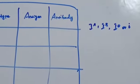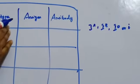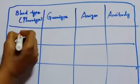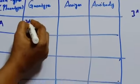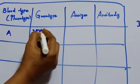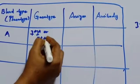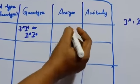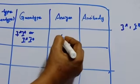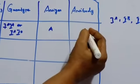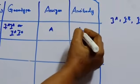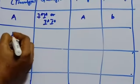And now let us see the blood type and its genotype, antigen and antibody. First one blood type A. The genotype may be IA IA or IA IO. Antigen which is present on the red blood cell is A. Antibody is found B.